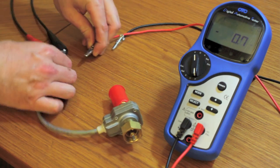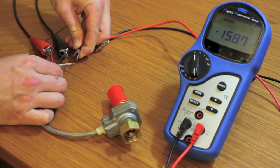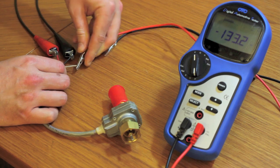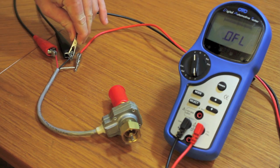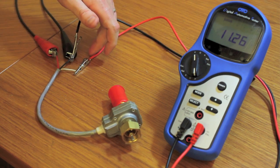We are going to take our red lead and hook that to the signal output wire. Then our black lead is going to go to a common ground. In this case we are just going to put that right there.